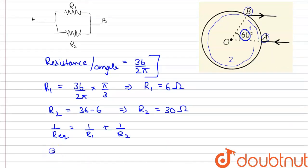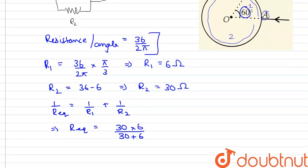Substituting the value we can write R equivalent is equal to 30 multiplied by 6 upon 30 plus 6. And on calculating, this comes out to be 5.